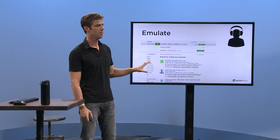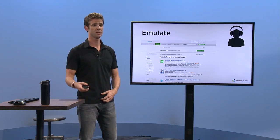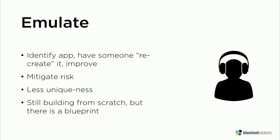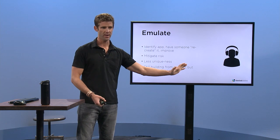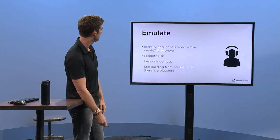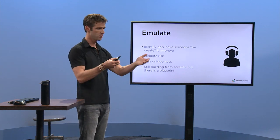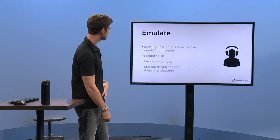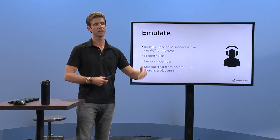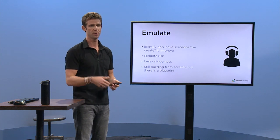Emulating is one of the most popular methods and one that I've seen a lot of students be really successful with. Emulating essentially means you identify an app that's out there and have someone recreate it and improve it. What emulating does is mitigate your risk, because it gives you almost a blueprint you can hand to someone — it's going to answer 80% of your questions about what happens when you click things. It's less unique than building from scratch because you're starting from an established framework, but you still know what you're building.